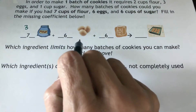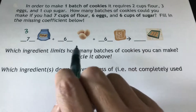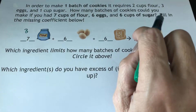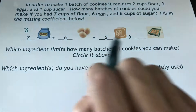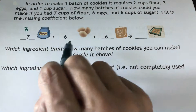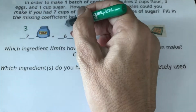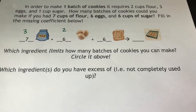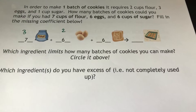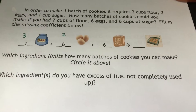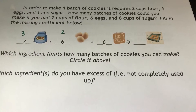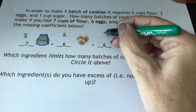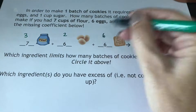Now let's look at the eggs. I have six eggs and I need three eggs for one batch, so six divided by three gives me two — I can make a maximum of two batches of biscuits with the eggs that I have. With the sugar, I only need one cup and if I have six cups, I can make six batches of biscuits.